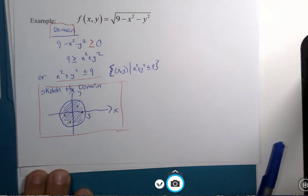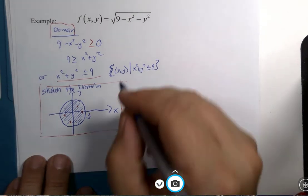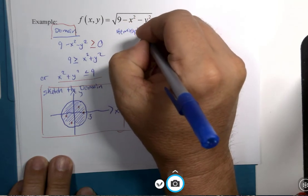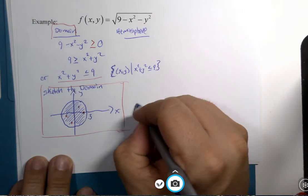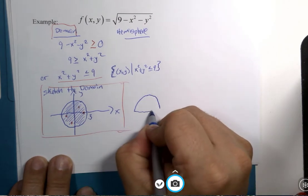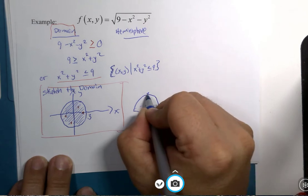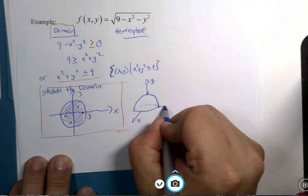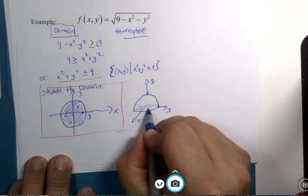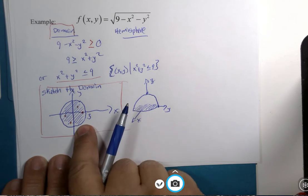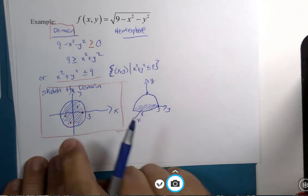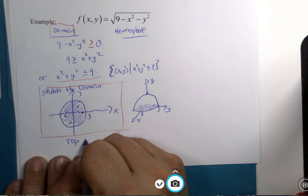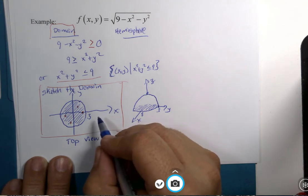Now, if you recall from the previous segment, this was actually a hemisphere graph. This circle here on the bottom is that circle. This circle of radius 3 on the bottom, it's that circle.